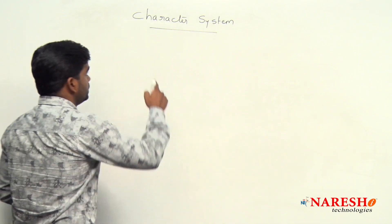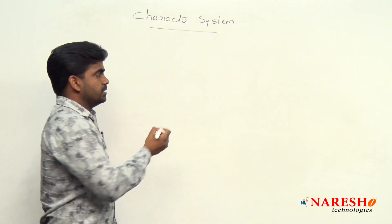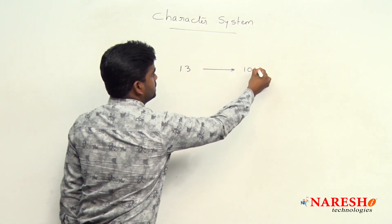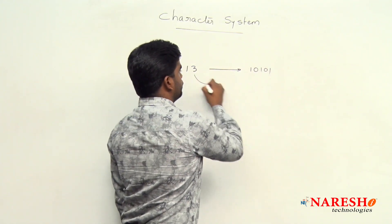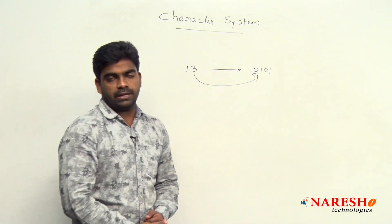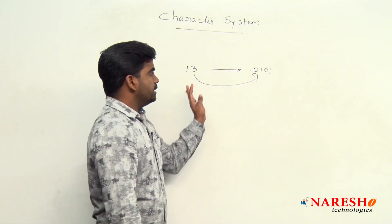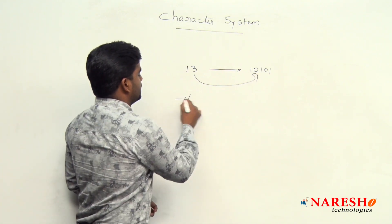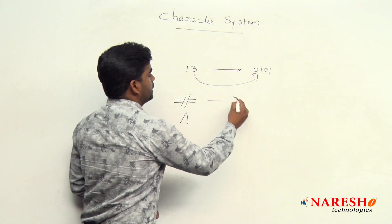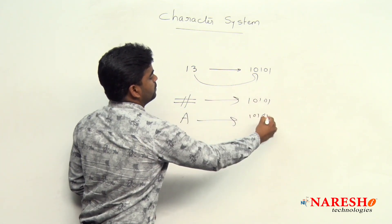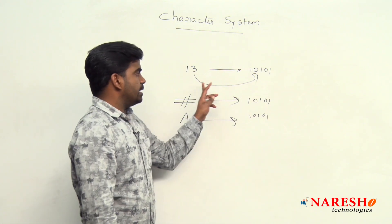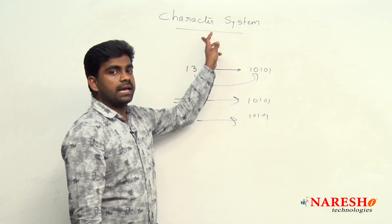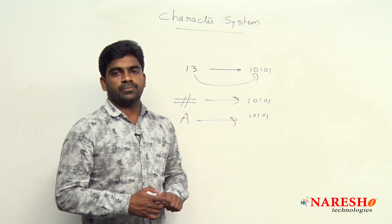Character system — generally, suppose if there is one value and you want to convert that into binary, because the machine understands only binary language. Suppose if you want to convert 13 into binary, number system is there. But suppose if one symbol or one character is there, how can you convert it into binary? Number system is for number conversion. So in programming languages, they introduced the character system for character conversion.